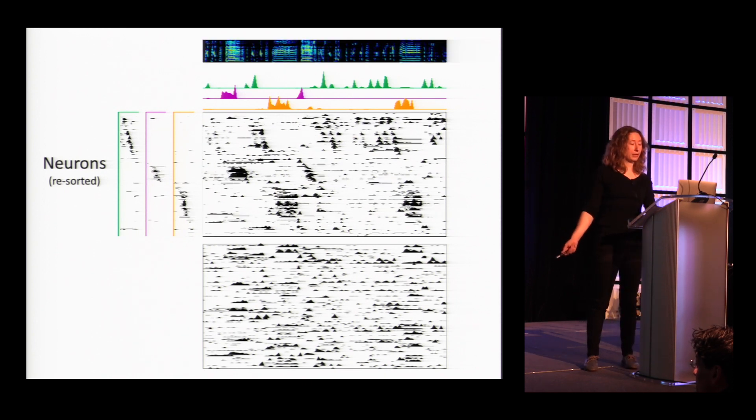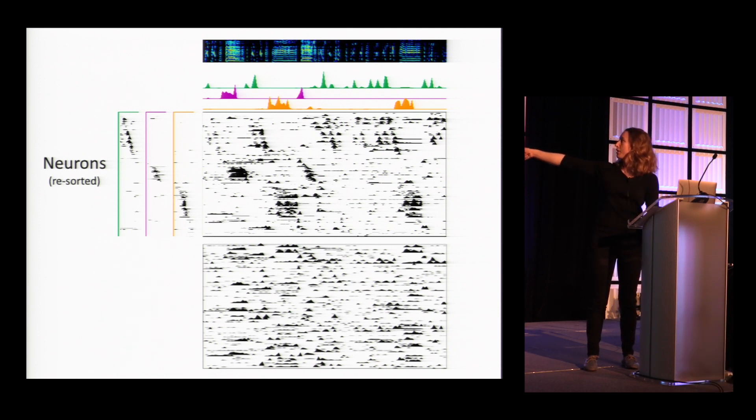Now if we look back at the song the bird was singing, here's a spectrogram of the song frequencies by time. You can see that each of these neural sequences correlates with a particular type of feature in the bird's song, even though it's a very noisy juvenile song. So how does this work?